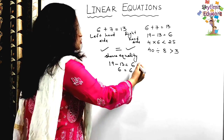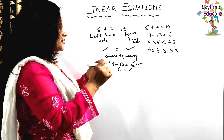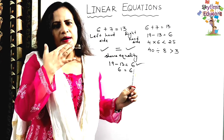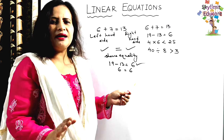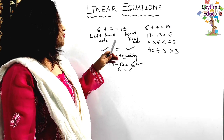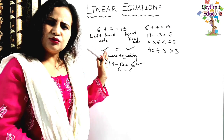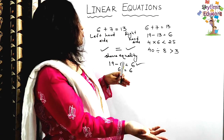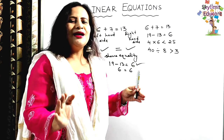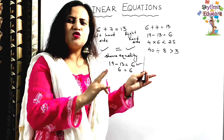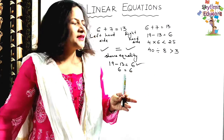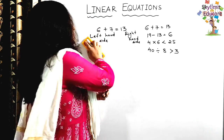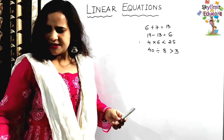Remember: an equation must always have an equal to sign. Whatever is on the left-hand side of the equal to sign is the left-hand side of the equation, and whatever is on the right-hand side is the right-hand side. These two sides are always equal.